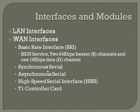LAN interfaces are generally going to be Ethernet ports on the LAN side where the users are connecting their individual PCs. Some of the interfaces mentioned in the book: a Basic Rate Interface, BRI, for ISDN service, which consists of three logical channels — two 64-kilobit bearer channels that handle data, and one 64-kilobit data channel that handles signaling so those bearer channels can traverse data. And then you've got synchronous serial, asynchronous serial, as well as the high-speed serial interface.